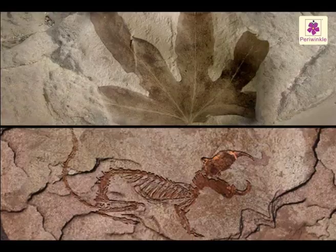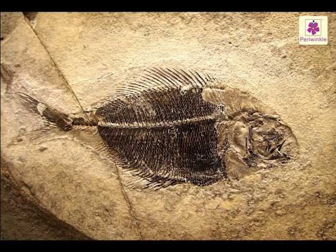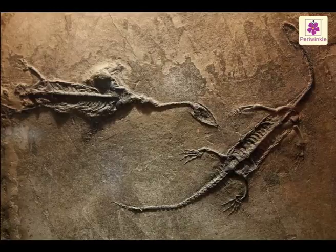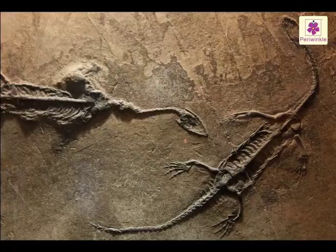Fossils are the hardened remains or impressions of plants and animals, and are found in rocks. They are formed when plant or animal remains get quickly buried in the mud or sand. After thousands of years, the weight of the upper layers of soil press down on these remains, pressing them hard into the rocks.